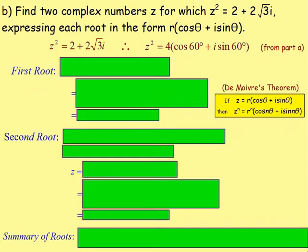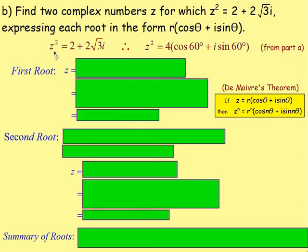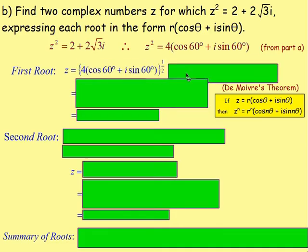Part B: find two complex numbers z for which z² equals 2 + 2√3i, expressing each root in the form r(cosθ + i·sinθ). We know from part A that z² = 2 + 2√3i, which in polar form is 4(cos60 + i·sin60). To work out the square root, we're taking that expression to the power of one half.